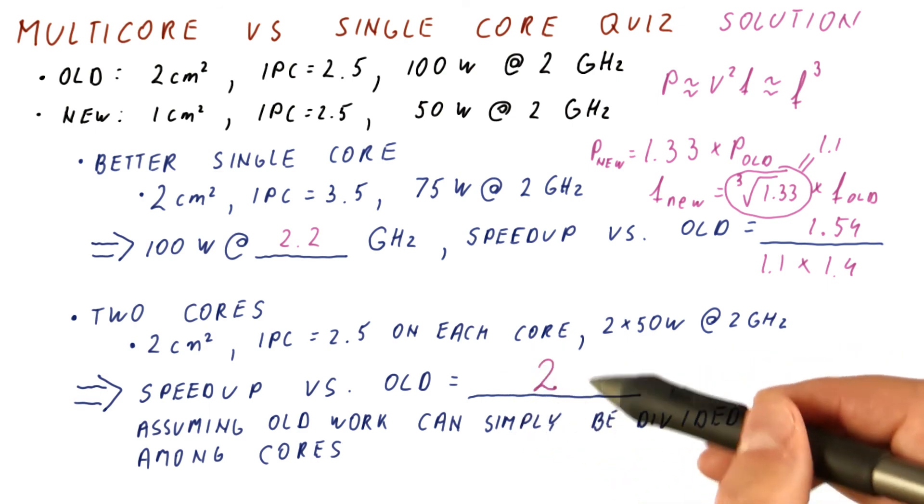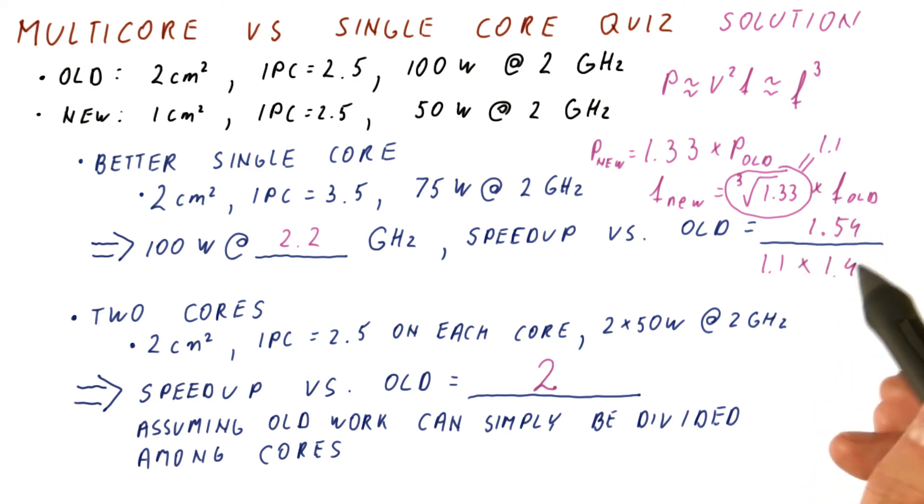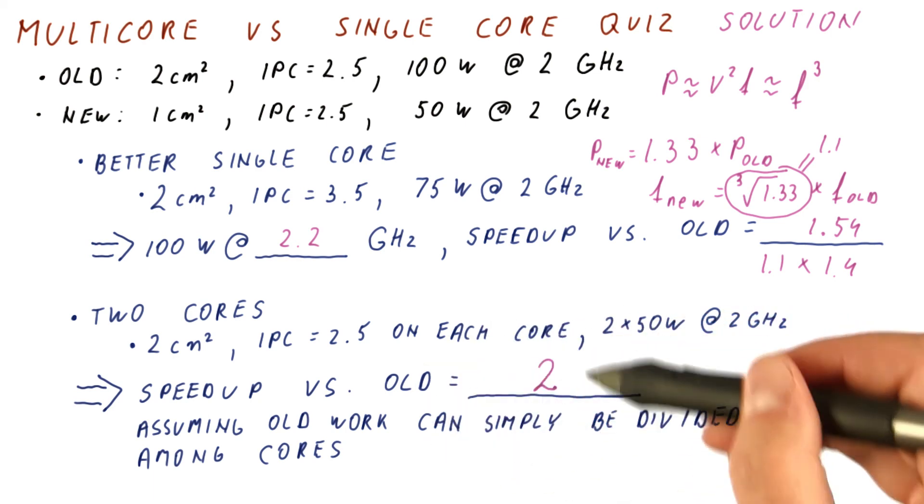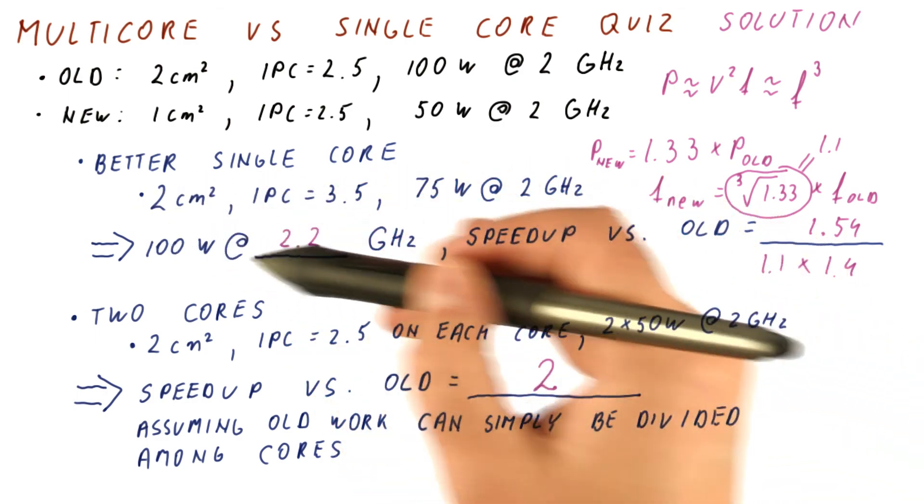As you can see, two cores are achieving a better speedup relative to the old system than a fancier core. Which means that if we indeed do have programs that can use the two cores effectively, then this is the better option than improving the core and consuming the chip area that way.